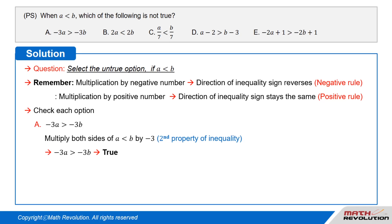Option A: negative 3 times a is greater than negative 3 times b. Let us apply the second property of inequality, which is the negative rule. That is, when we multiply an inequality by a negative number, the inequality sign changes. So if we multiply the given inequality a is less than b by negative 3, we get negative 3a is greater than negative 3 times b. Thus this option is true.